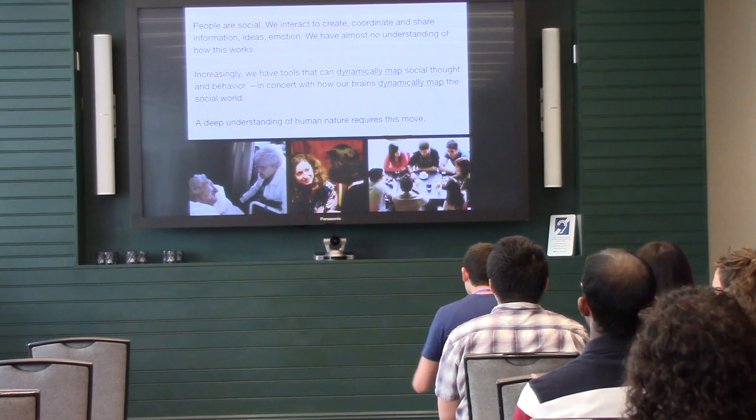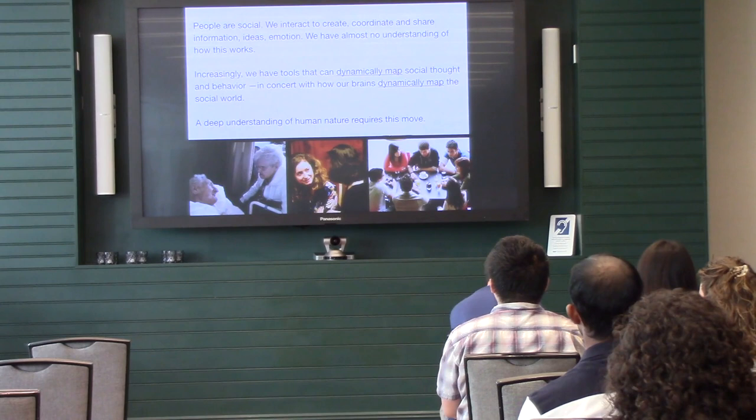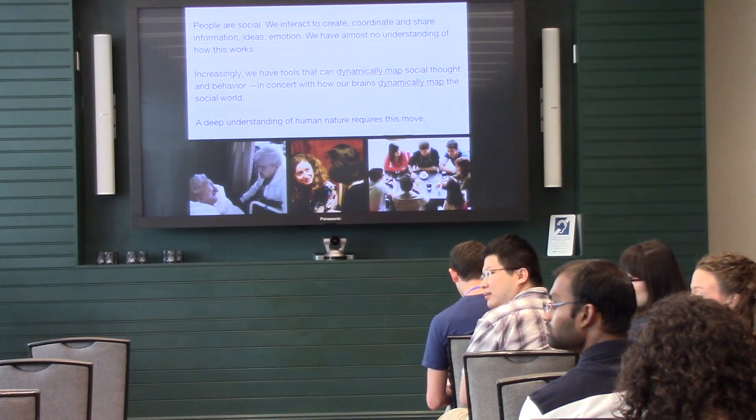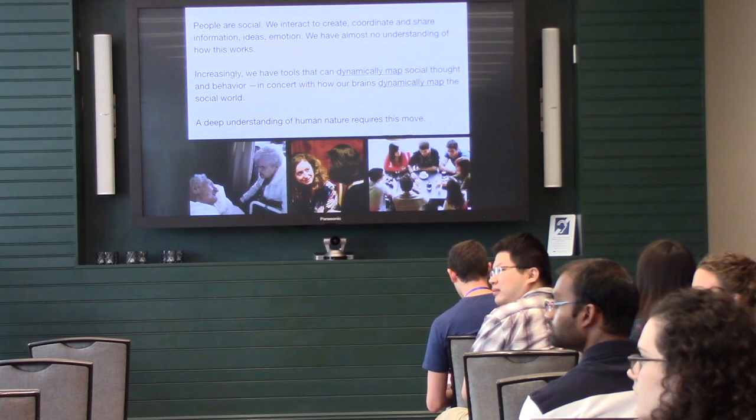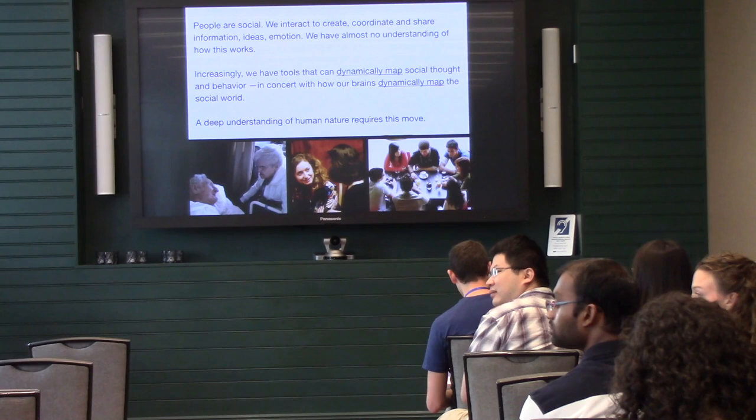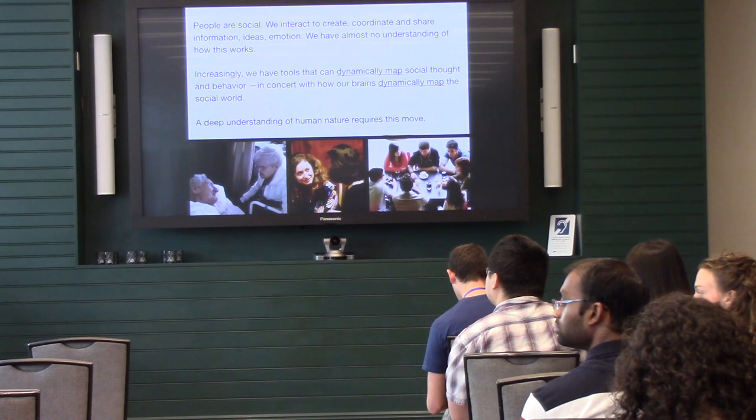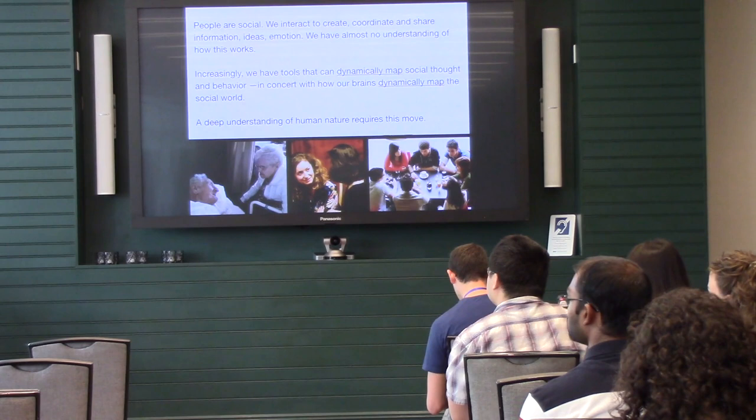So people are social. We interact to create coordinates, share information, ideas, emotion. We have almost no understanding of how this works. But now, increasingly, we have the tools to dynamically map social thought and behavior in concert with our brains. And a deep understanding of human nature is going to require this move. Thank you.